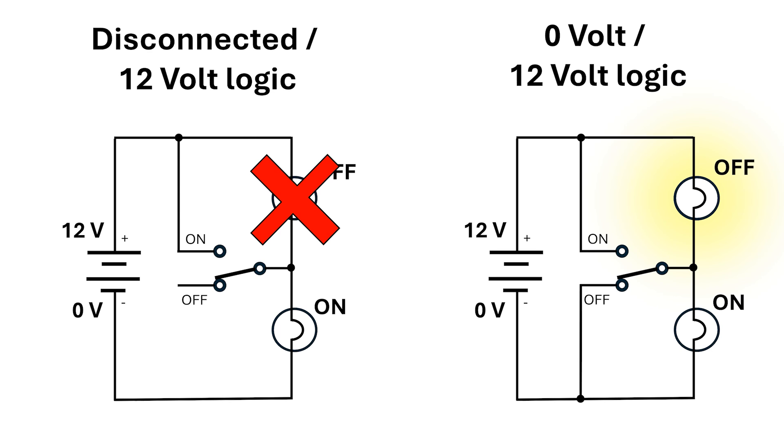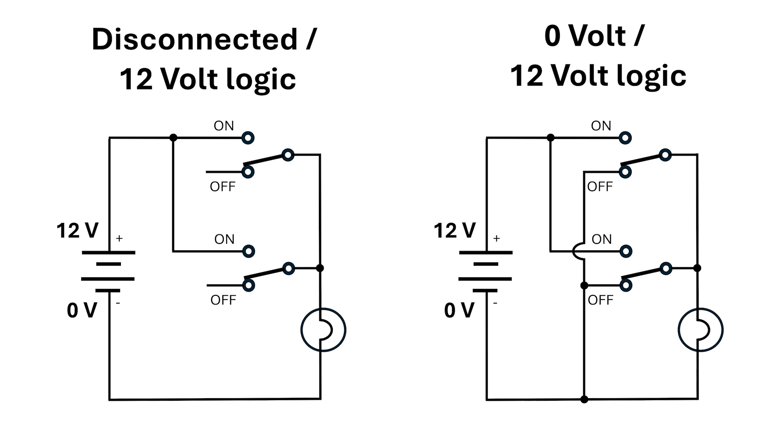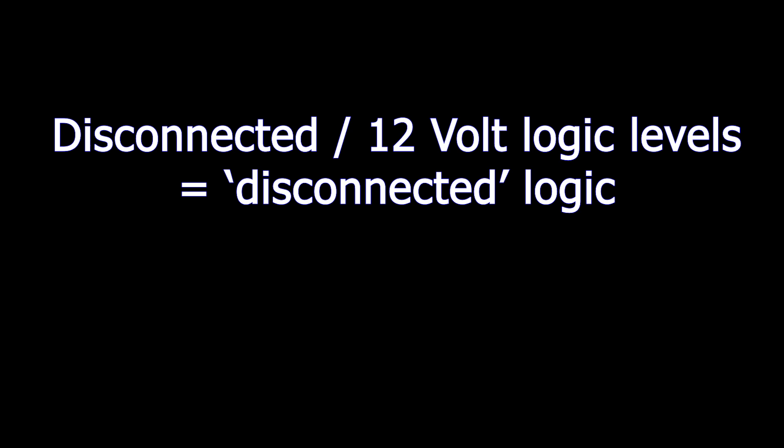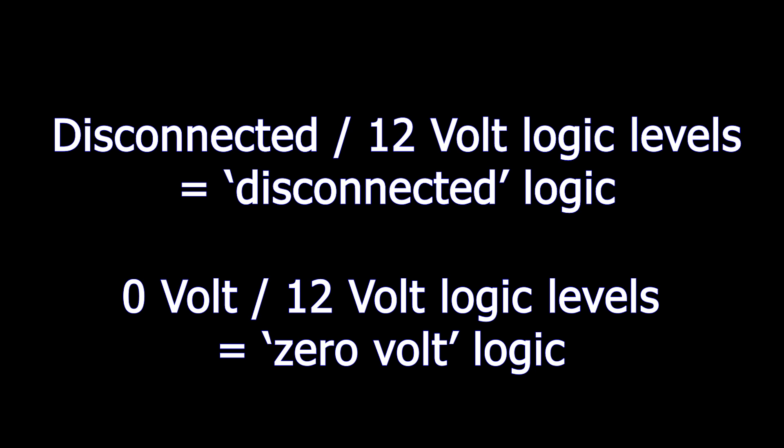But let's say we want to connect the output of two switches together. When both switches are off, everything is okay, and when both switches are on, everything still works. But what if one switch is off and the other's on? For the rest of this video, I'm going to use the terms disconnected logic and 0-volt logic, which refer to the off condition. In all cases, on is still 12 volts.